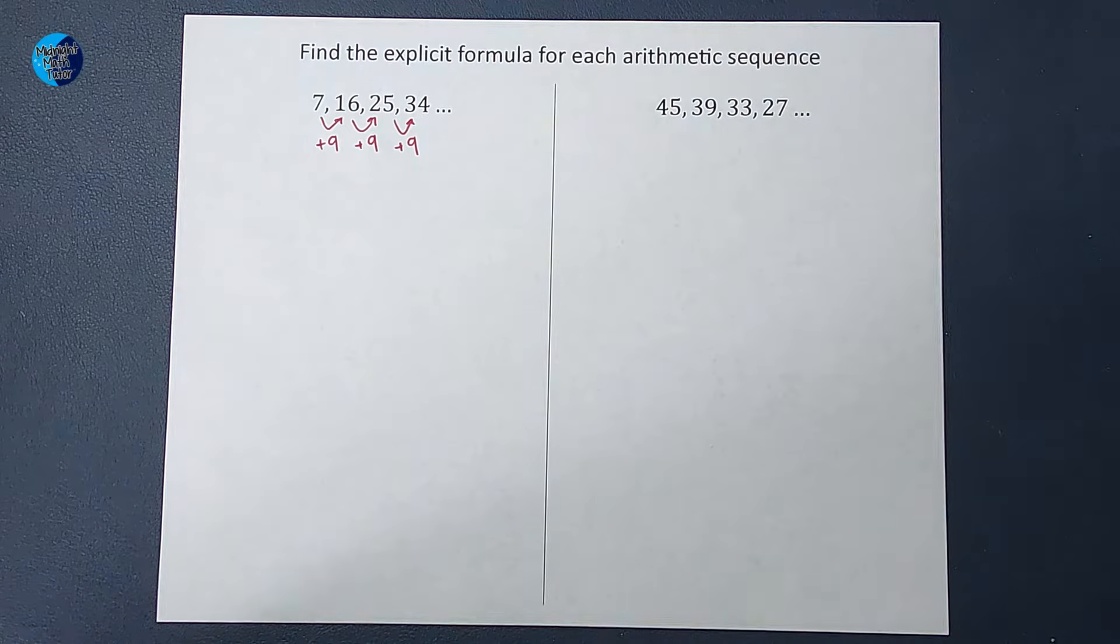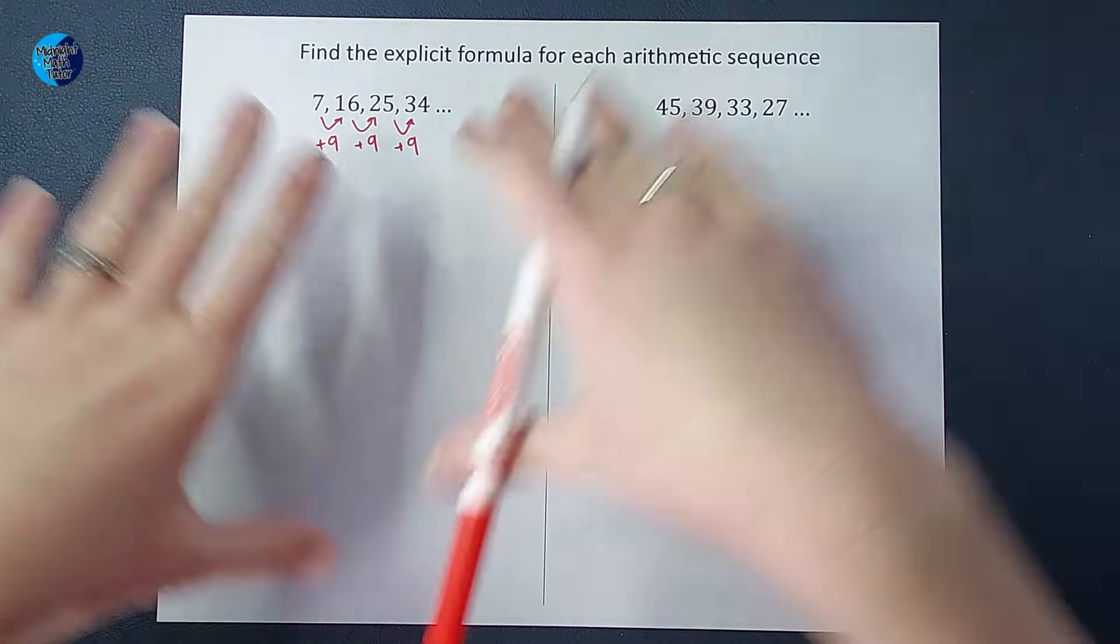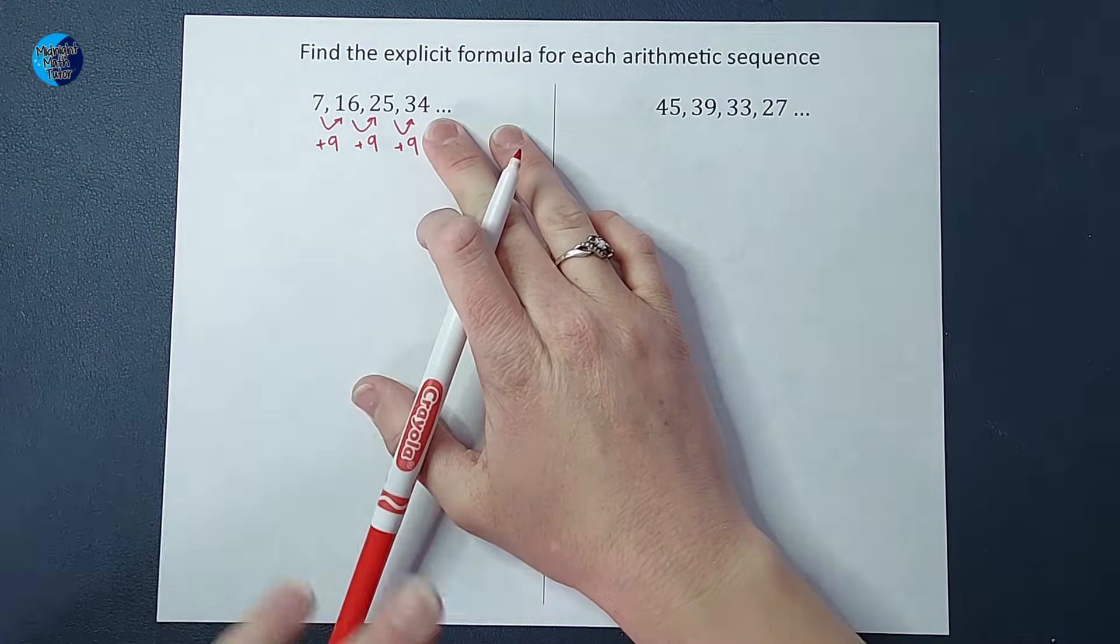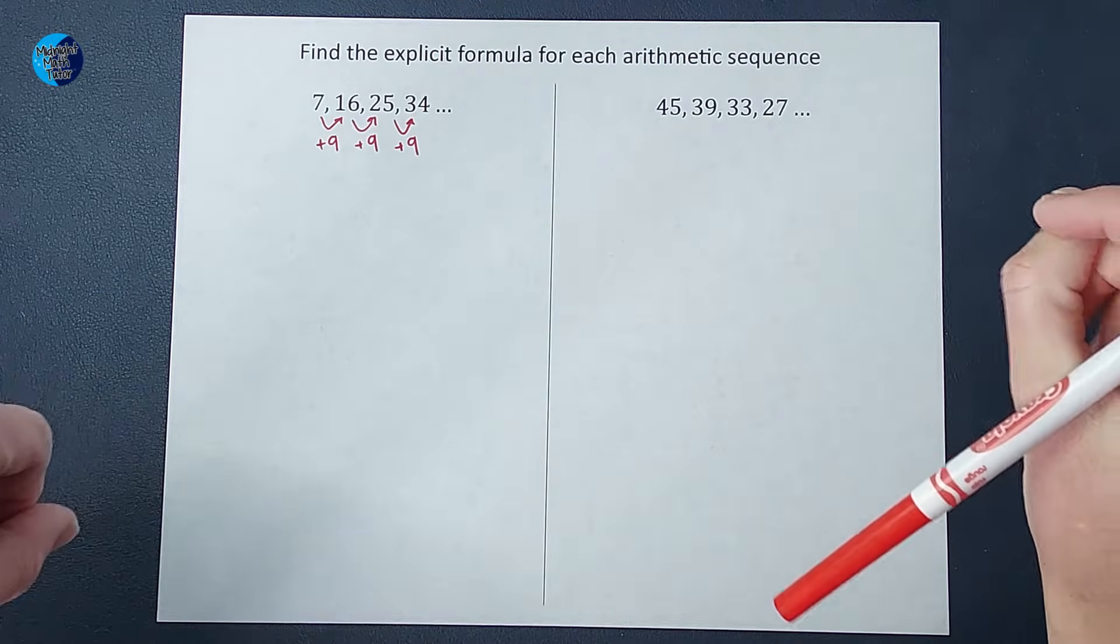Now the purpose of an explicit formula is to find more numbers in this sequence. This dot dot dot is telling me that this keeps going. It doesn't end there.